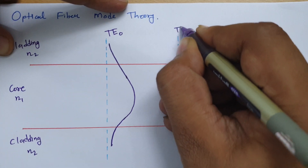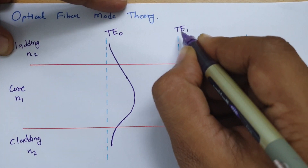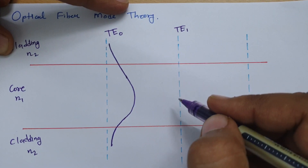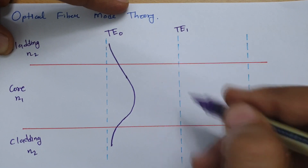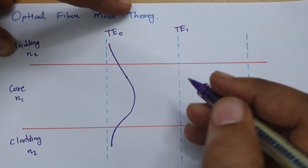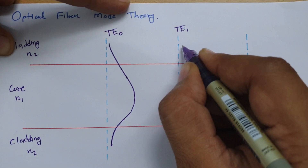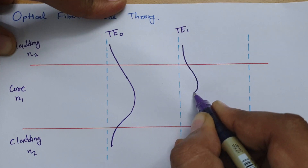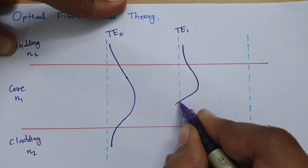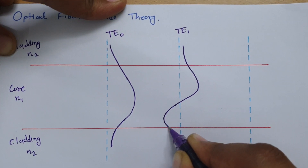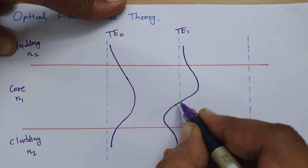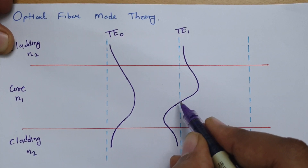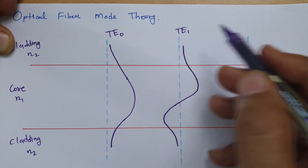Now let us look at TE1 mode. TE1 mode means there will be one crossing happening through the reference. Starting from one end, you will find there is one zero crossing occurring — that is what defines TE1 mode.